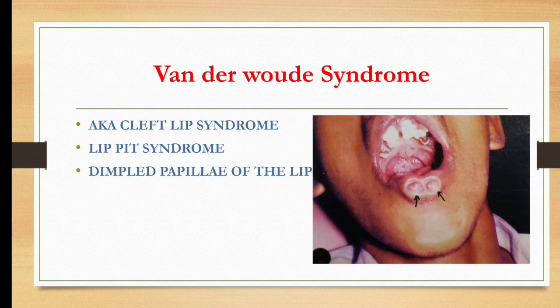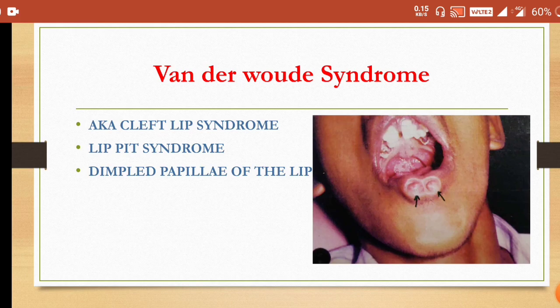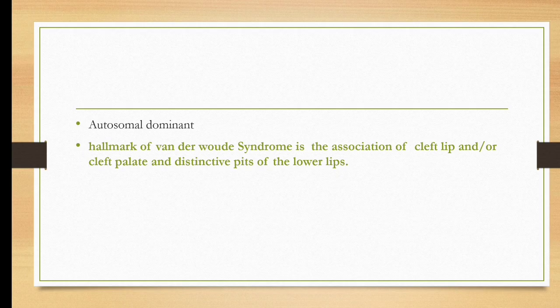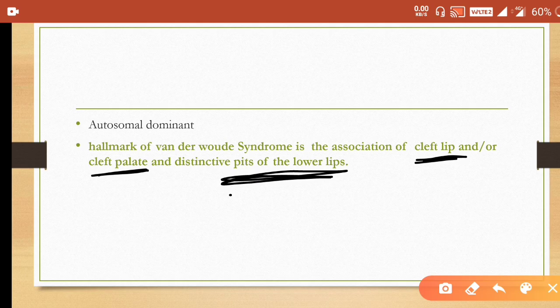The next syndrome is Van der Woude syndrome, also known as cleft lip syndrome, lip pit syndrome, or dimpled papilla of the lip. It is inherited as autosomal dominant. The hallmark is the association of cleft lip and/or cleft palate and distinctive pits of the lower lip — meaning pits on the lower lip must be present, along with either cleft lip or cleft palate or both.